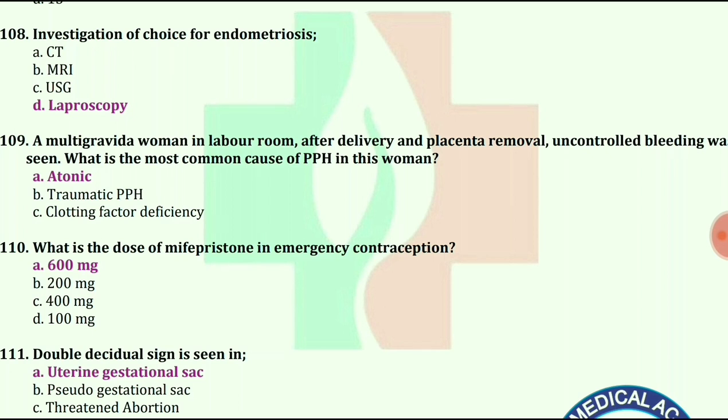What is the dose of mifepristone in emergency contraception? The answer is 600 mg.